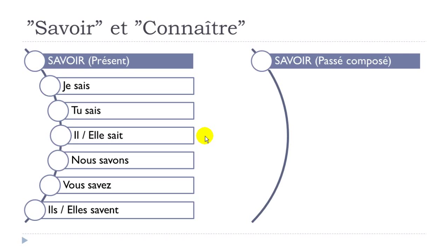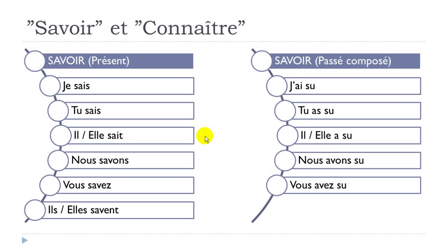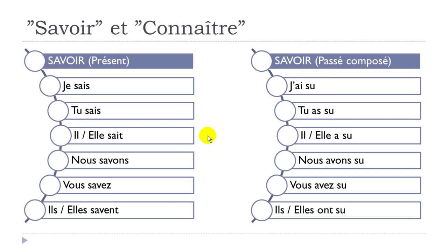Now the passé composé form of Savoir: j'ai su, tu as su, il a su, elle a su, nous avons su, vous avez su, ils ont su, elles ont su. As introduced in Unit 5, you put the verb avoir at the present form, then the participe passé — for Savoir it's 'su' — and it doesn't change for any person. Note the little liaison in 'nous avons su' and 'ils ont su.'